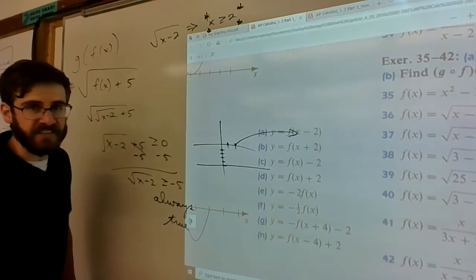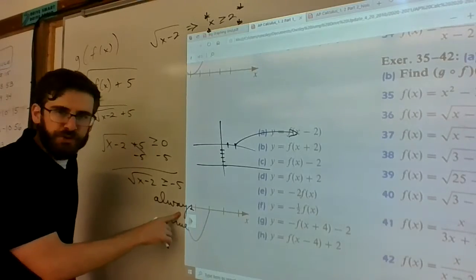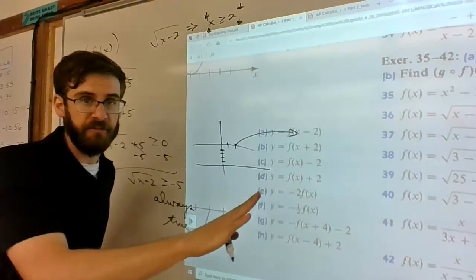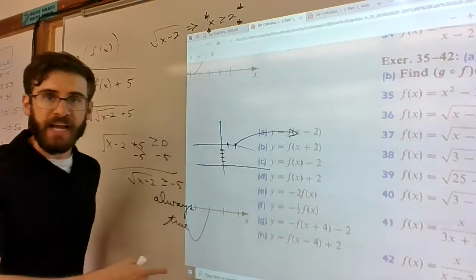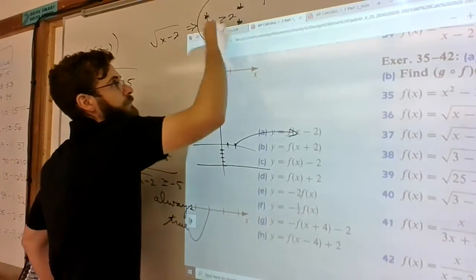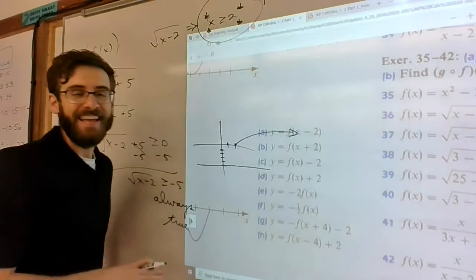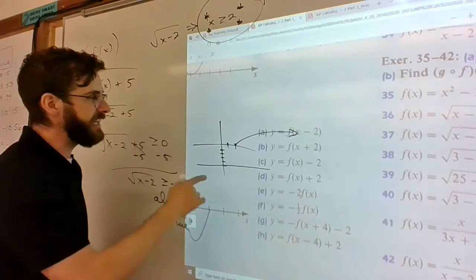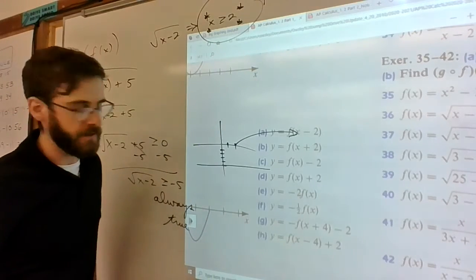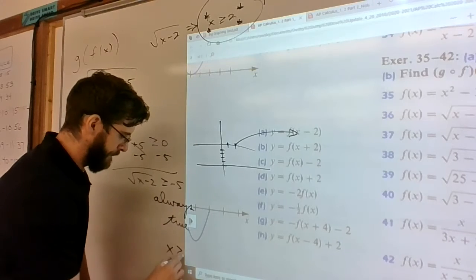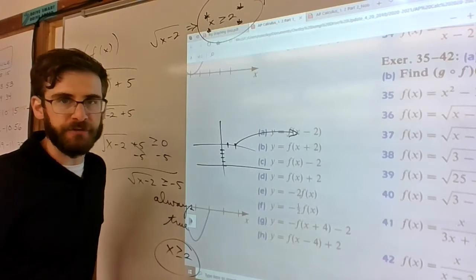So it doesn't matter what value I plug in there, this will always work, except all the values that are less than two. That's all the places it doesn't work. So it's kind of like 'always true' should sort of push us in the direction of all real numbers, but then we have to keep in mind the restriction given to us by our first domain that we plugged in. So there's the domain for g of f.